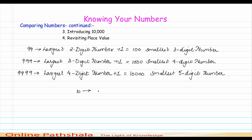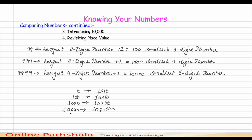Let me explain this further. If I expand 10, it is 1 into 10. What is 100? If I expand 100, it is 10 into 10. Then what is 1000? 1000 is actually 10 into 100. So what is 10,000? It is 10 times 1000. That is the reason why this number is called 10,000. I hope I have made clear what 10,000 is and why it is known as 10,000.